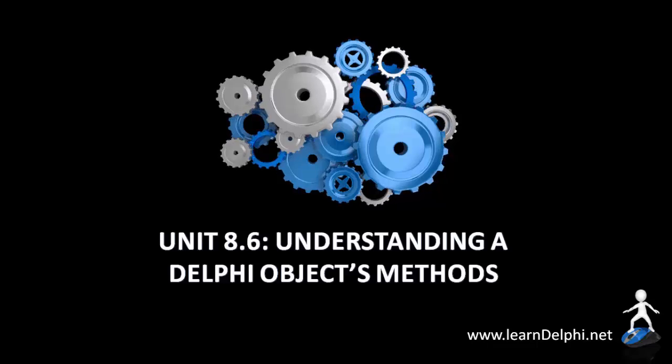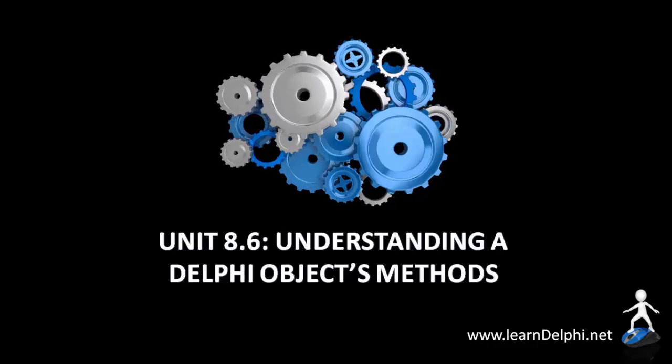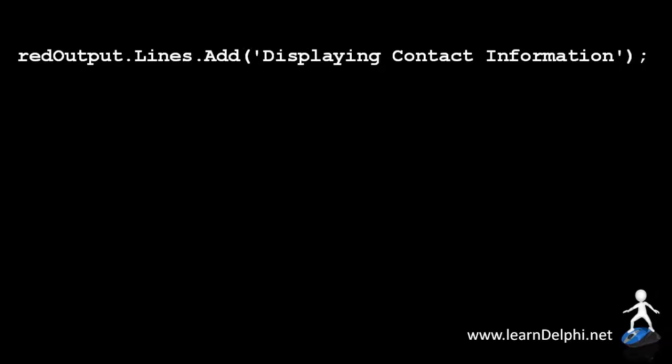In this video I'm going to explain how to write code for a Delphi object's methods. In the previous video we added a line to the lines property of a rich edit. I told you that we will look at this statement again in this tutorial.